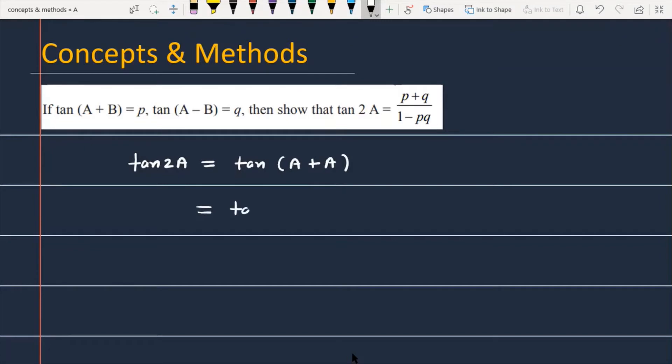In the next step, we can write it tan of A plus B plus A minus B. Now, as you know, we have the formula of tan A plus B.